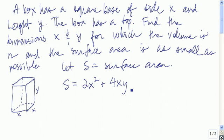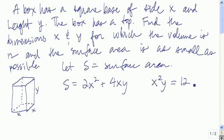Next, we want to write an equation relating the two variables that appear in the primary equation, and that's called the constraint. The constraint in this problem is that the volume has to be equal to 12. The volume is the area of the base times the height, so x squared times y has to be equal to 12.